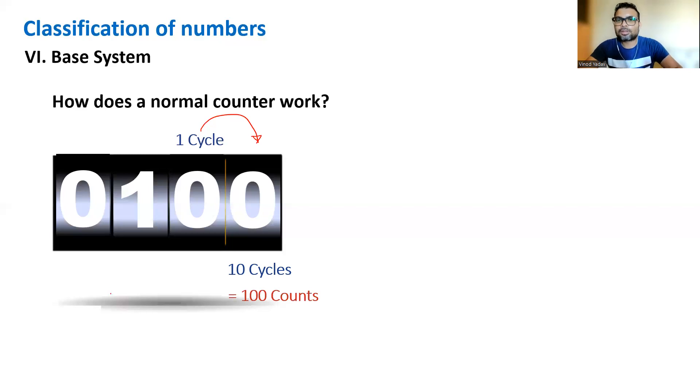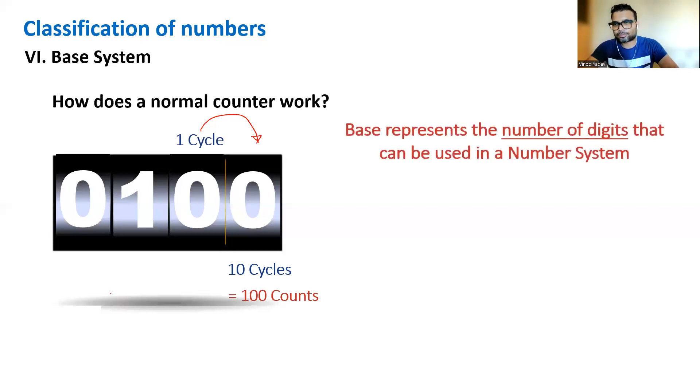Let's formally define what is base. Base represents the number of digits that can be used in any number system. In our system, the most famous system which we use in our world, we use ten digits, zero to nine, so we call our system the decimal number system.